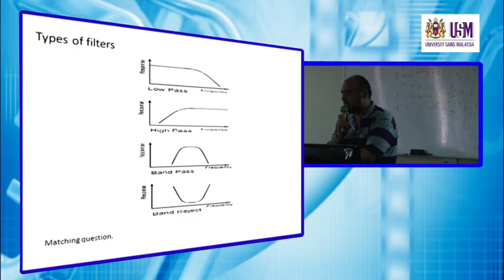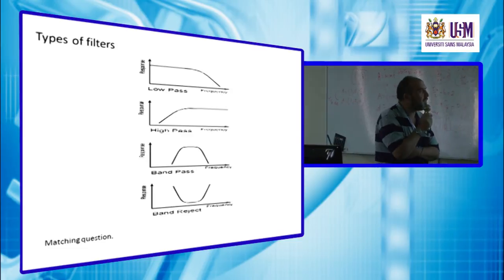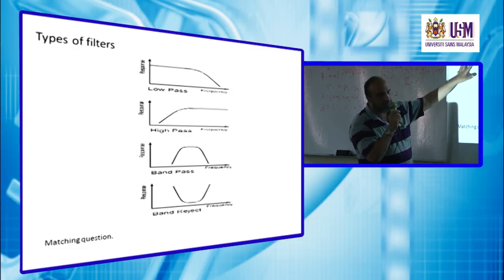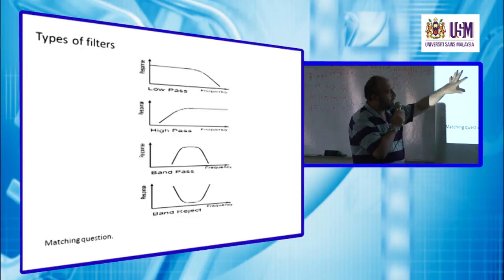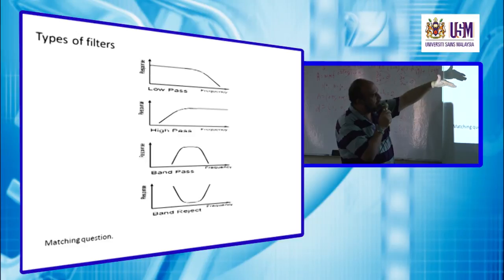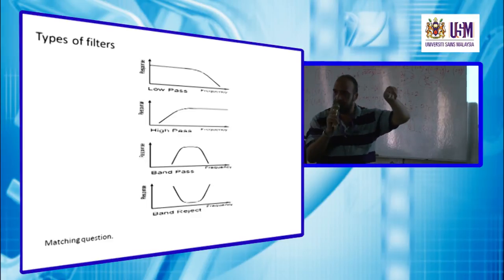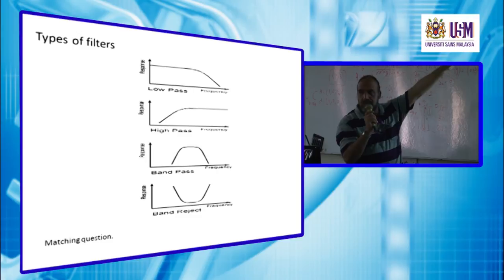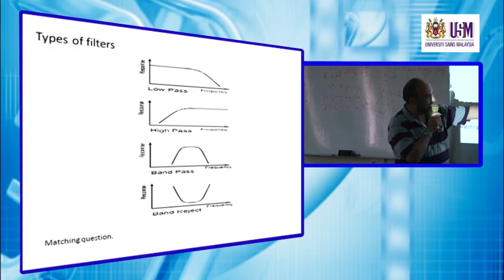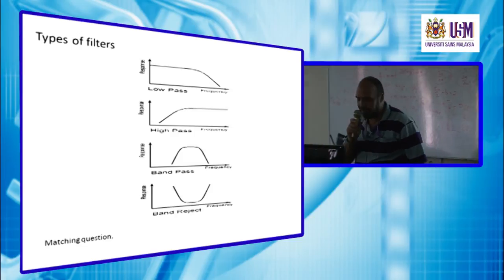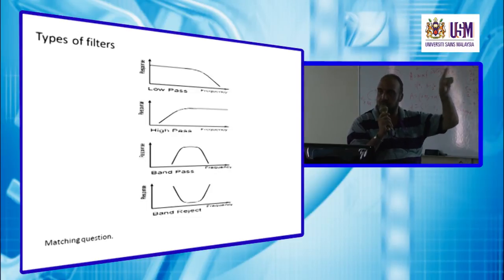The band-reject filter allows low frequencies and high frequencies to pass, but removes a certain band from the data. This diagram may be used in a matching question in the final exam or quiz, where one column shows the frequency-response diagrams and the other column lists the filter names — low-pass, high-pass, band-pass, and band-reject — and you match them correctly.